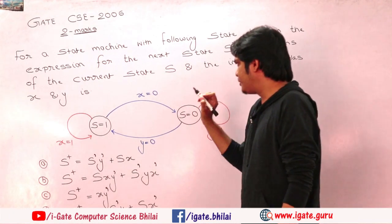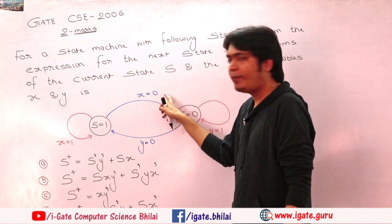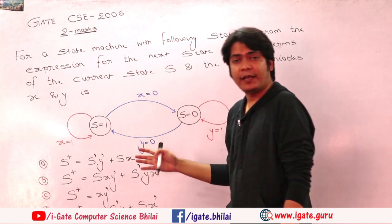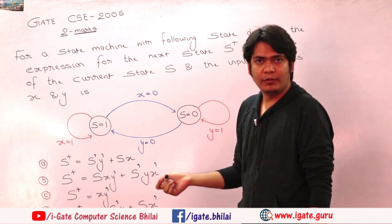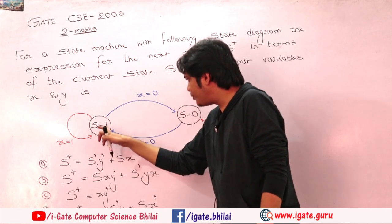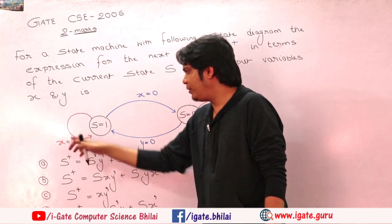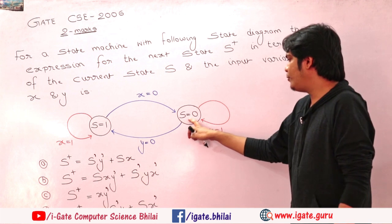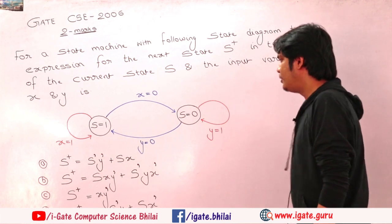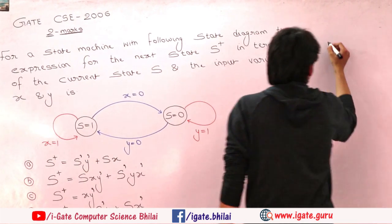First of all, I will describe the transition diagram. Here, S=1 transitions to 0 when X=0, but Y is not relevant — meaning Y is a don't-care term. For any value of Y, when Y=0, the transition goes from 0 to 1. When X=1, the state remains 1, independent of Y. When S=0 and Y=1, independent of X, we have a transition from 0 to 0. We will now define the characteristic equation of the flip-flop.